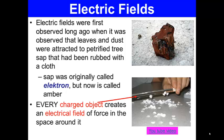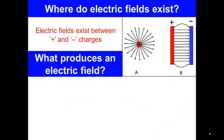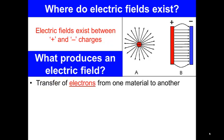Every charged object creates an electric field of force in the space around it. Electric fields exist between positive and negative charges. What produces an electric field? The transfer of electrons from one material to another produces an electric field.